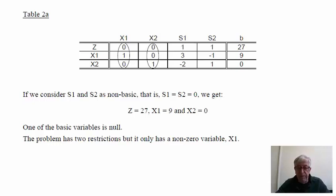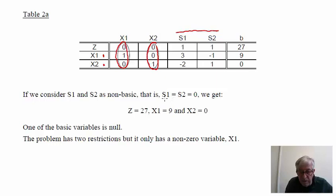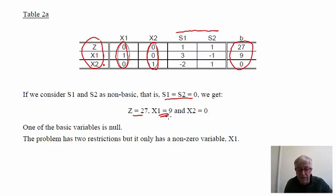After the transformation, we obtain a new table. The basic variables are identified by the unit vectors — these are x1 and x2. Setting the non-basic variables equal to zero, we obtain z equal to 27, x1 equal to 9, but x2 is 0. That is, we have two restrictions but only one decision variable different from zero. This characterizes the degenerated solution: it has fewer variables greater than zero than the number of restrictions.